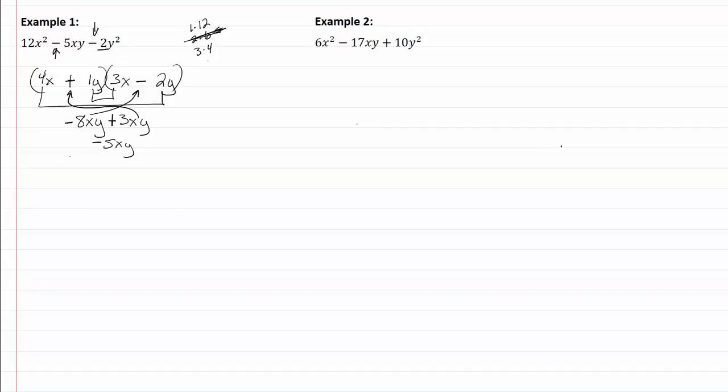So now that I have those in place my answer is complete, so we have (4x + y)(3x - 2y) and I'm done.